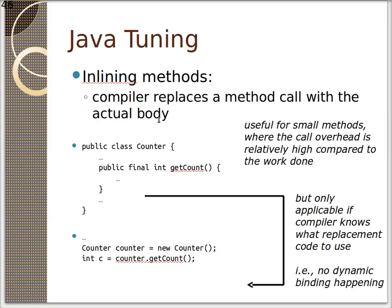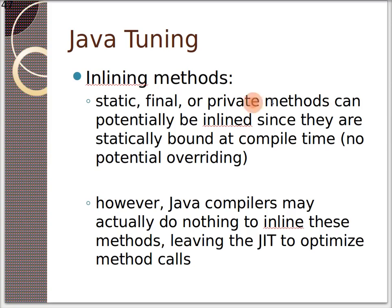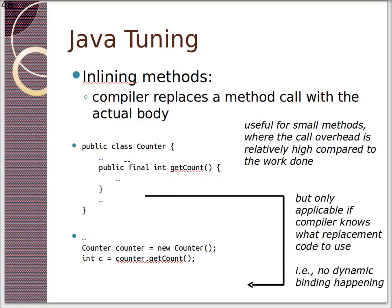Another thing you can do is inline methods. So the compiler, or you, can replace a method call with its actual body. So if you've got int get count, it might put the body of that code here. But it's only applicable if the compiler knows that it can safely take this code, and no binding will happen. So you can do inlining. So static, final, or private members can be inline since they are statically bound at compile time. So there's no overriding. But Java compilers usually do not inline at all. Why? Because they use the JIT to optimize the method calls. So they see if you keep doing this call over and over and over again, it measures how hot that path is. And then it says, hey, I can just strip out this code and make it go faster. Just replace this delegation with some immediate code.